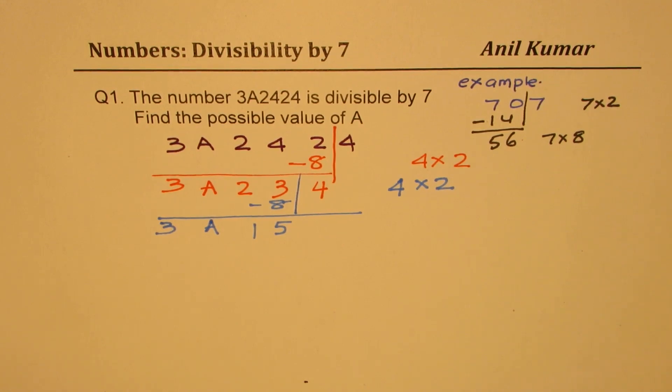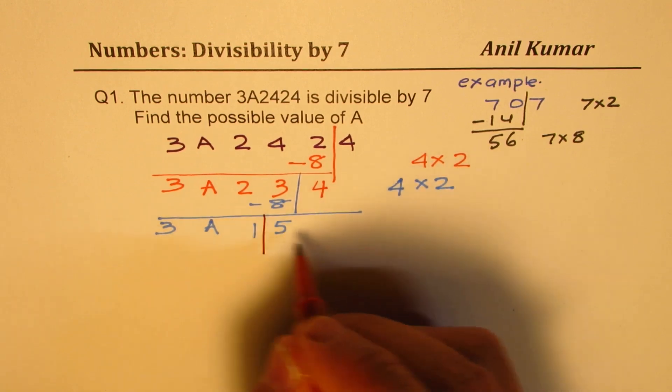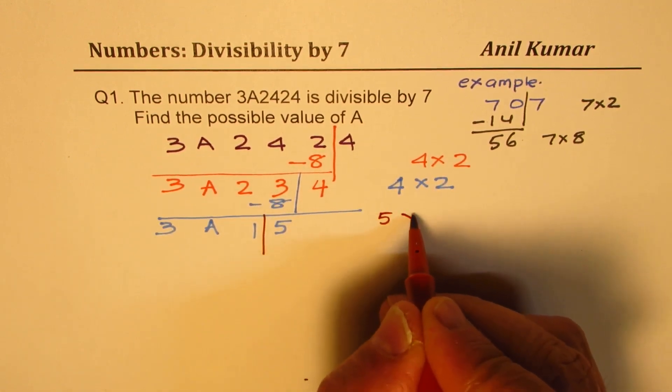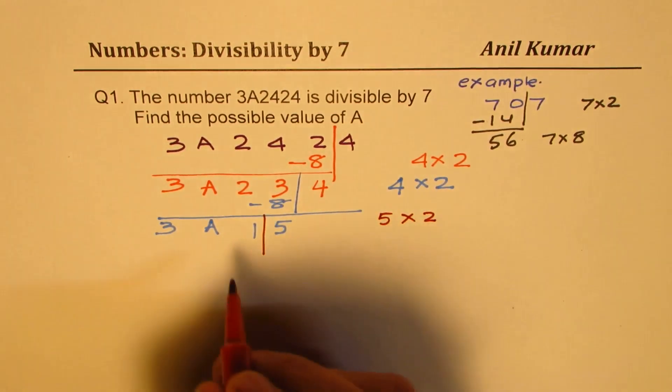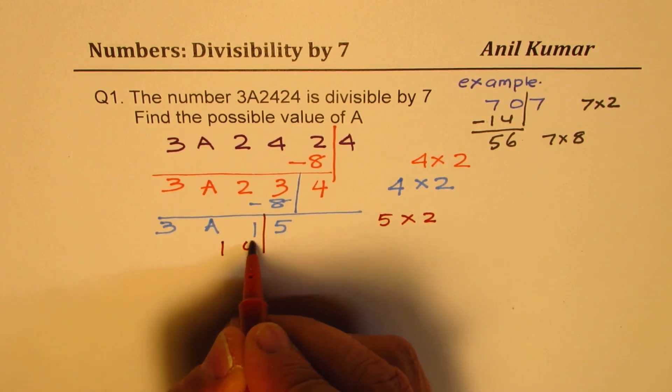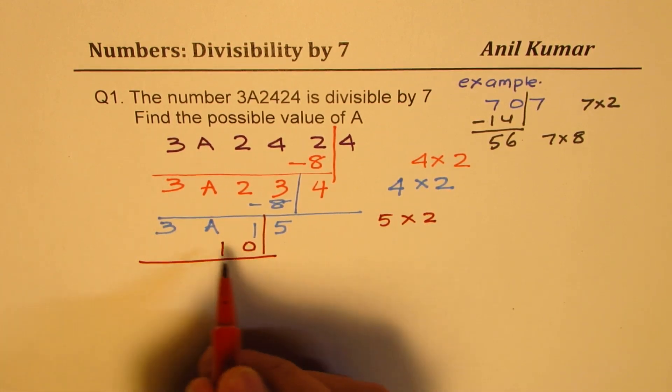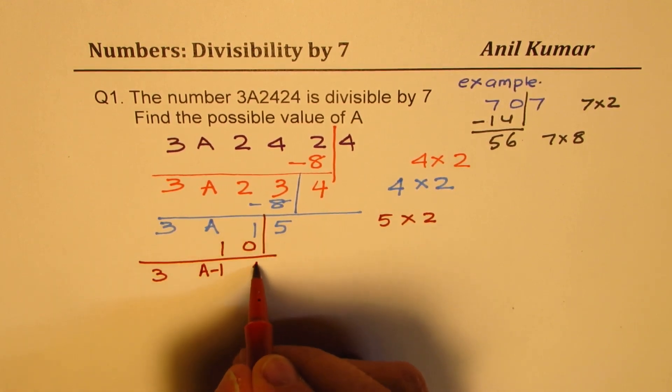This time, the last digit is 5. So from the rest of the number, we are going to take away 5 times 2, which is 10. So when you take away 10, you get 3, here you get A minus 1, and here you get 1.